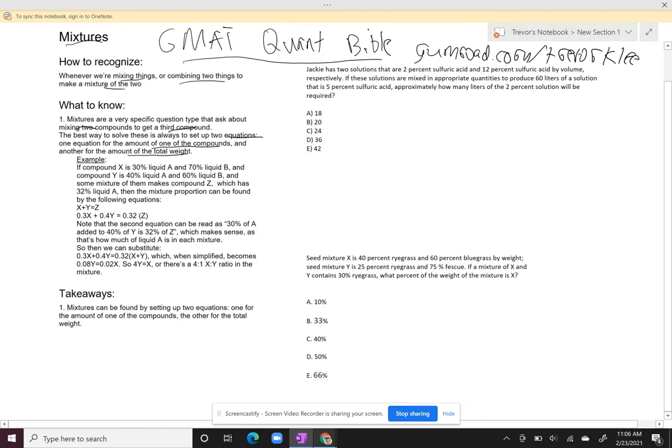So take a look at this example here. So I've got compound X, 30% liquid A, 70% liquid B. Compound Y, 40% liquid A, 60% liquid B. I mix them together, I get compound Z, which is 32% liquid A. So what is the mixture proportion?